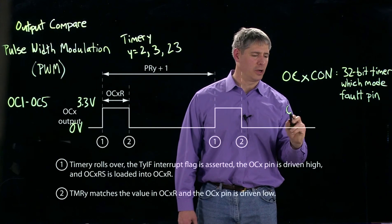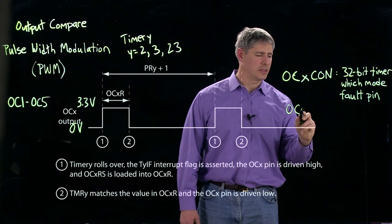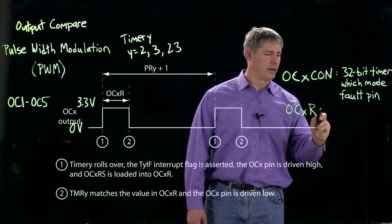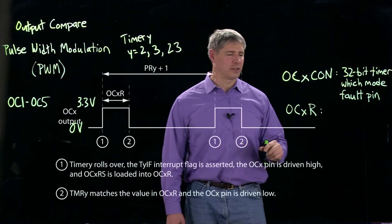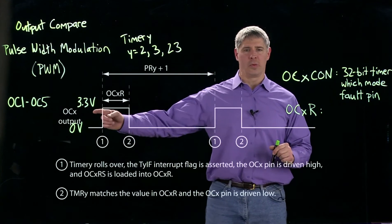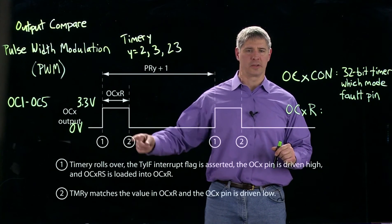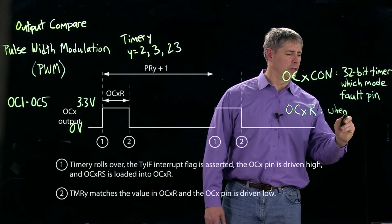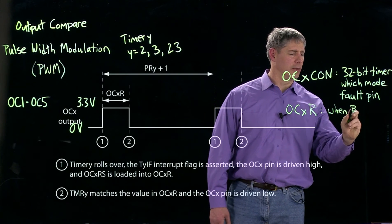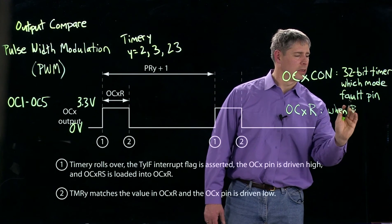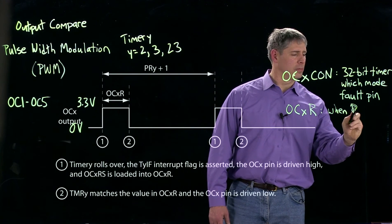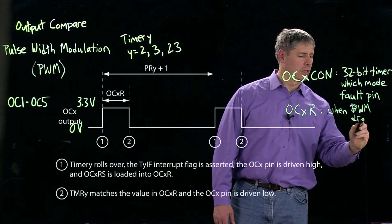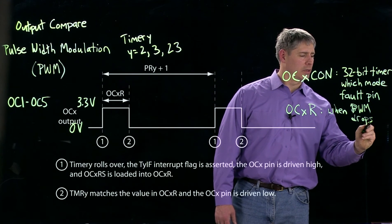Another special function register is OCXR. OCXR determines when the signal goes from high to low — that is, when the PWM signal drops low.